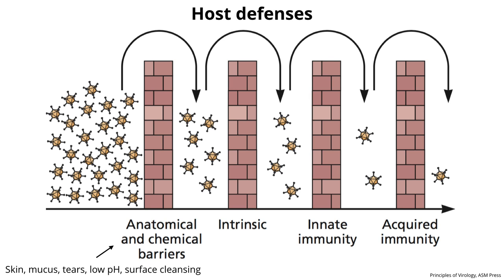Even at this stage, there are viral antagonisms of all these barriers—a theme we'll see at every level of host defenses. Our immune system is great, but if viruses weren't able to overcome aspects of it, they wouldn't be able to replicate. Even at the anatomical and chemical barriers, viruses get around them; for example, the skin falls off and spreads virus, and viruses can get through the skin by cuts, scratches, and mosquito bites.